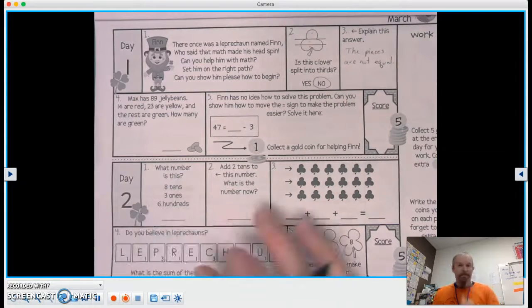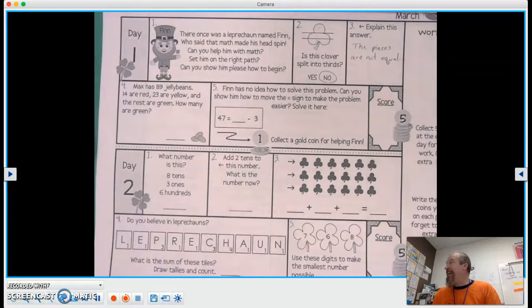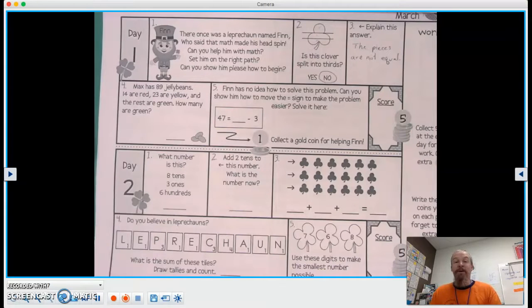All right, let's go to number four. Max has 89 jelly beans. 14 are red, 23 are yellow, and the rest are green. Well, how many are green?